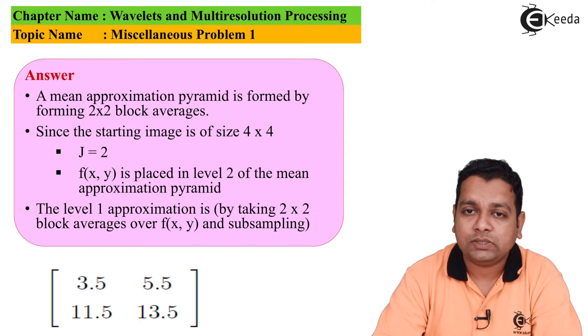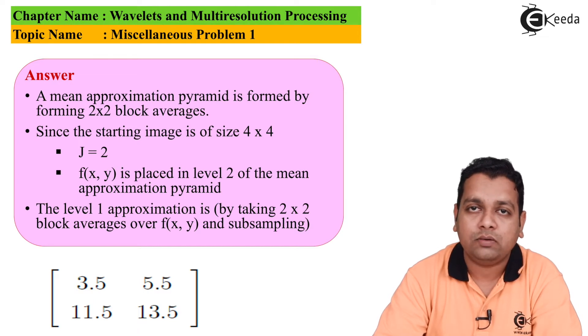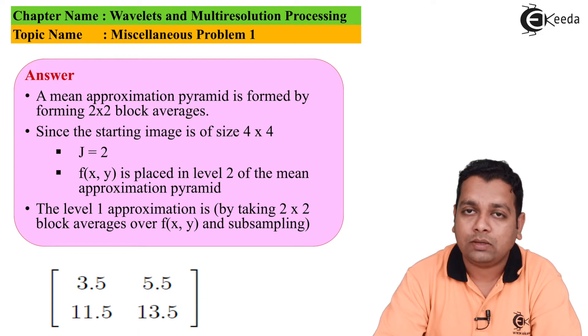The level 1 approximation is obtained by taking the 2 by 2 block averages over f(x,y) and subsampling. For the first neighborhood we obtain 3.5, for the next region we obtain 5.5. On the upper right we have 11.5, and 13.5 in the last quadrant.